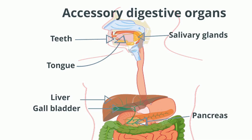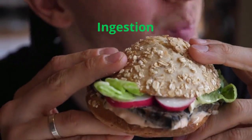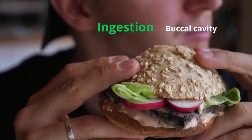Overall, the digestive system performs five basic processes: ingestion, digestion, absorption, assimilation, and egestion. Now let us study these processes in detail. The first one is ingestion. This process involves taking foods and liquids into the mouth. The mouth is also referred to as the oral or buccal cavity.